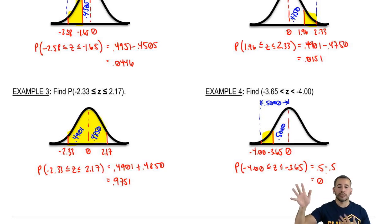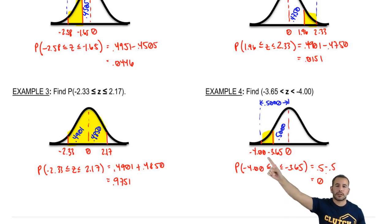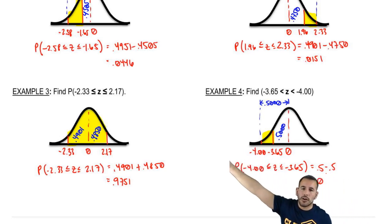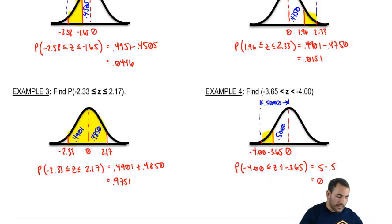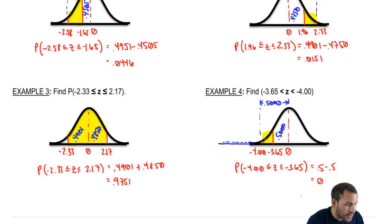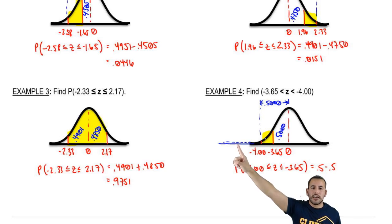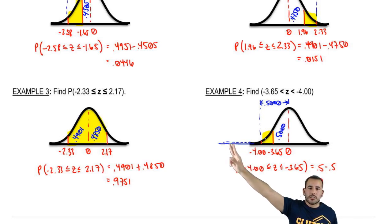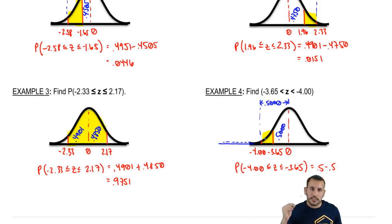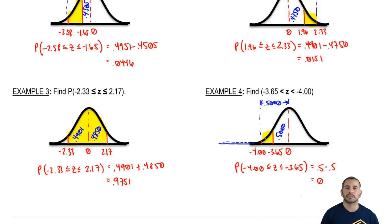Even though these drawings are very skewed, 3.65 would actually be way out to the extreme left. This assumes the distribution is continuous and goes on forever. At negative 3.65 and negative 4.0, the area between those two is basically zero — the probability of finding a z-score of 3.65 or higher in the tail is essentially 0%. So the probability between those two values is just zero. That's it for our concepts on how to use the z-table. Now let's apply these to a bunch of practice problems.